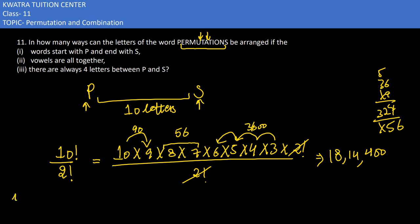This is the first part. Now the second part says that vowels are all together. We have to get the vowels. Now what are the vowels? E, O, A, U, I - this is 5 vowels.